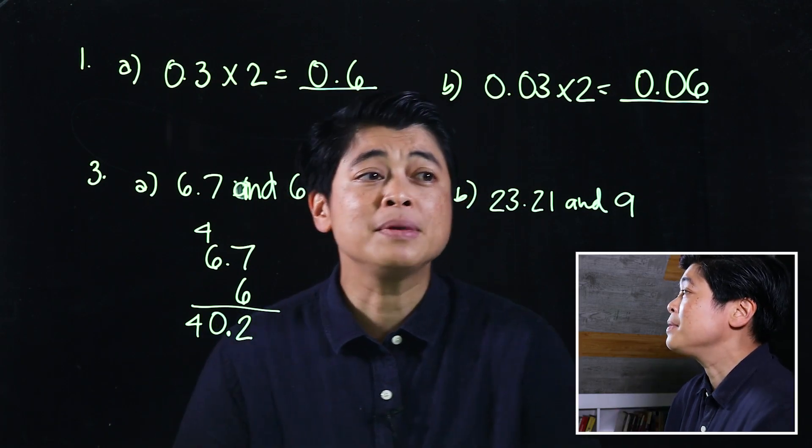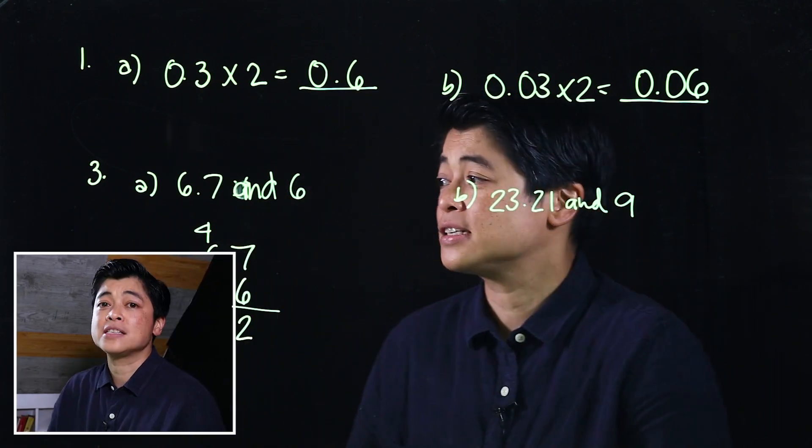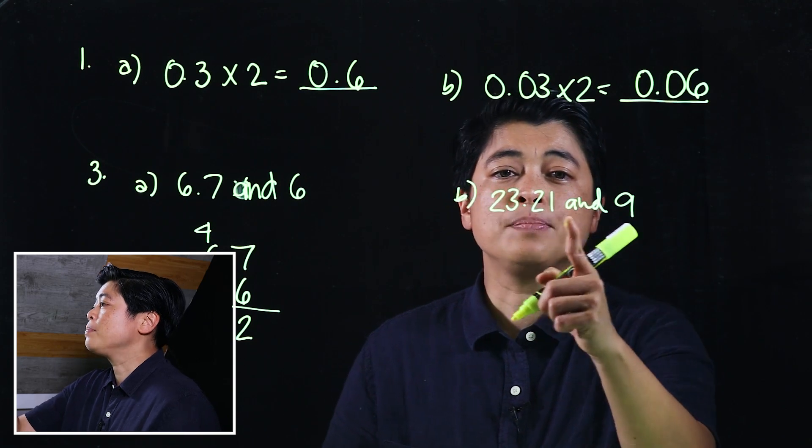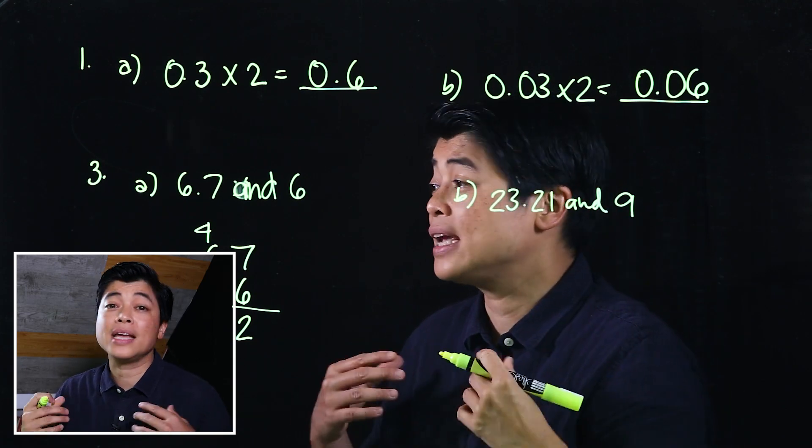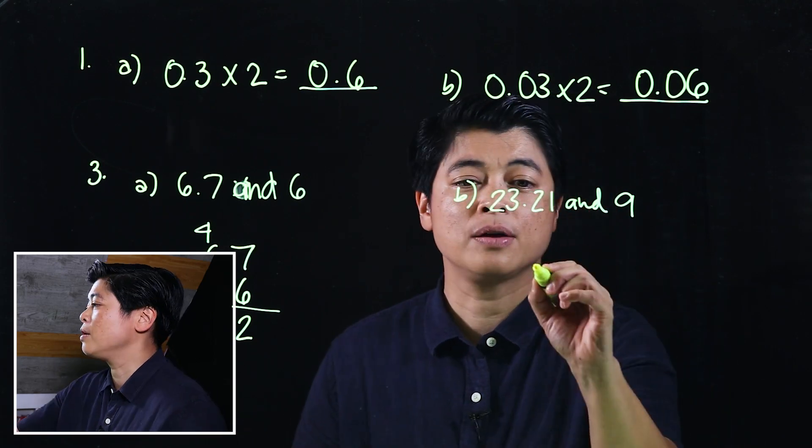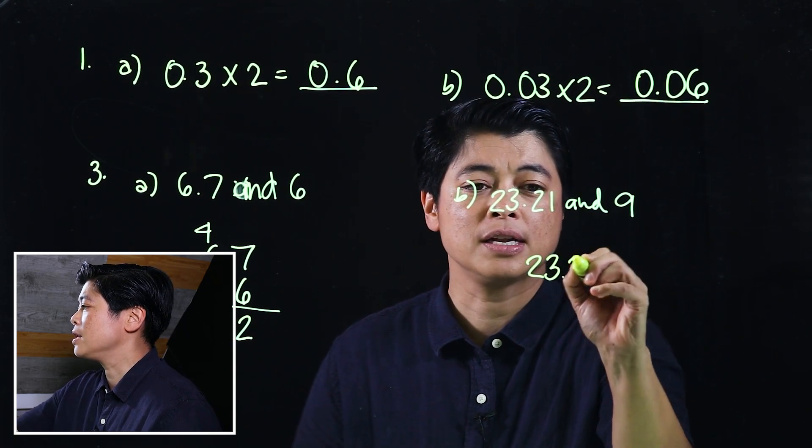Similarly, if we take the next number, it's 23.21 times 9. I can't do that mentally, so I will do it computationally.